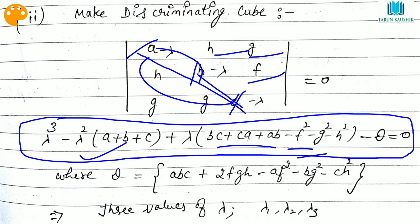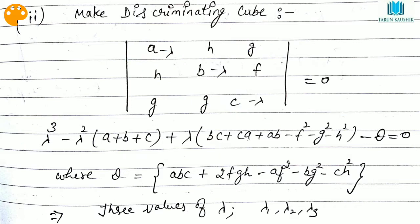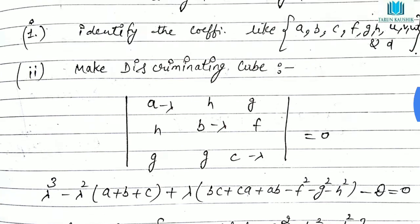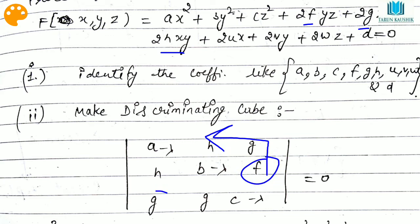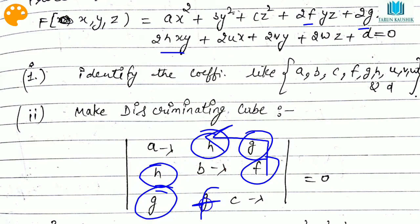To remember how to write the discriminating cubic, just write down a, b, c and subtract lambda from the diagonal elements. In the standard form, the off-diagonal elements go in alphabetical order: f, g, h. It is a symmetric matrix — so f, g, h appear in their respective positions. I made a small error earlier which I am correcting now.